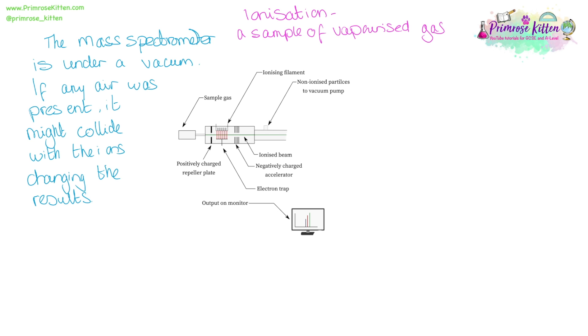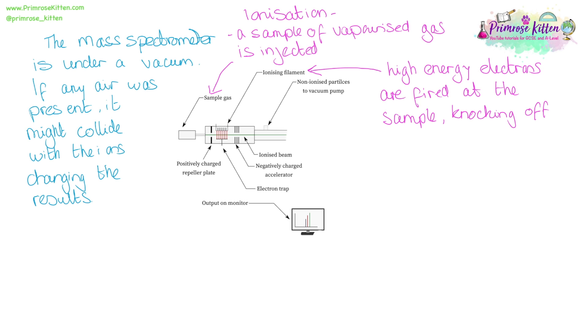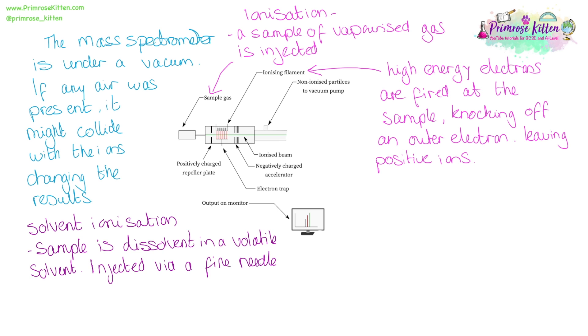We start with ionization. A sample of vaporized gas is injected, and high-energy electrons are fired at the sample. This knocks off an outer electron, leaving a positive ion. You can also have solvent ionization, where the sample is dissolved in a volatile solvent, injected via a fine needle, and the tip of the needle is charged, and the sample becomes positively charged. The solvent will then evaporate.